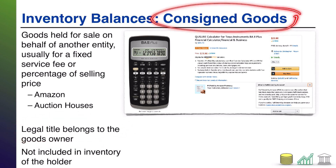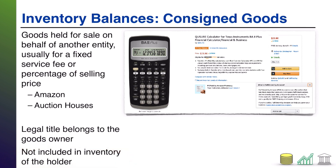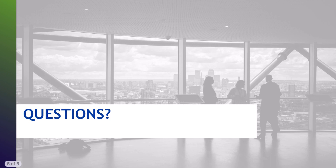What makes consigned goods special is the owner is not usually the one who has physical possession. So typically these goods are not included in the inventory of the holder. When Amazon counts their warehouses, they cannot include whatever they are fulfilling for someone else — that belongs to another party. That is it for establishing what goes into your inventory balance on the balance sheet. I hope you found this helpful, and I hope you join me for another video.